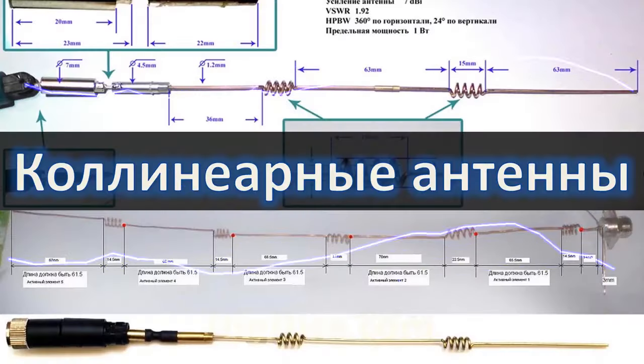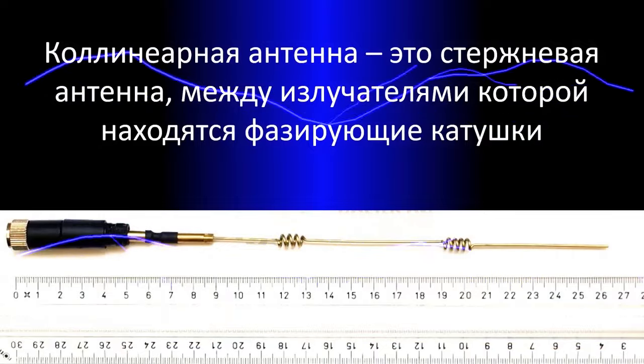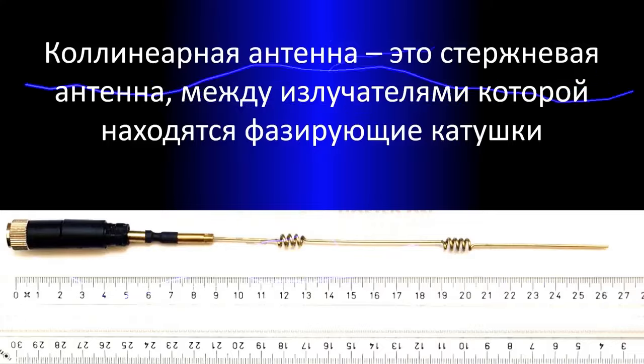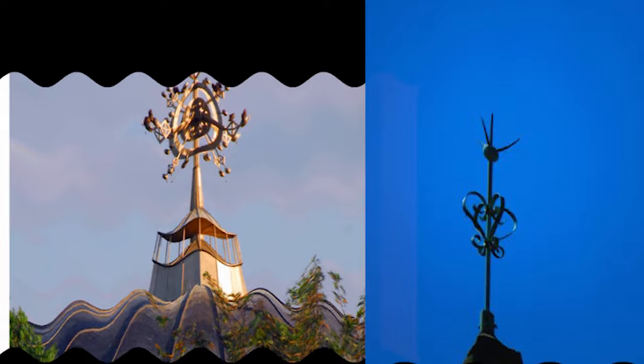Saying in simple words, collinear antenna is any antenna, omnidirectional, simple antenna with something between these quarter wavelength pieces. It can look different ways, something like this, something like this, because it's also collinear antennas.